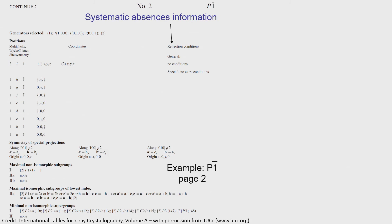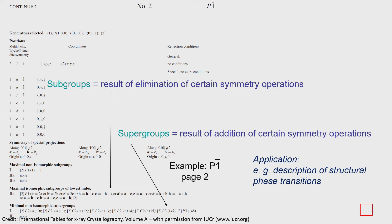There is also information about systematic absences of reflections in the X-ray diffraction pattern, which will be described in more detail in the second part of the course. At the end, there is information about relations of the space group type with respect to other space group types, particularly useful for describing structural phase transitions in the solid state. Subgroups are formed by elimination of certain symmetry operations, whereas supergroups result from addition of certain symmetry operations.